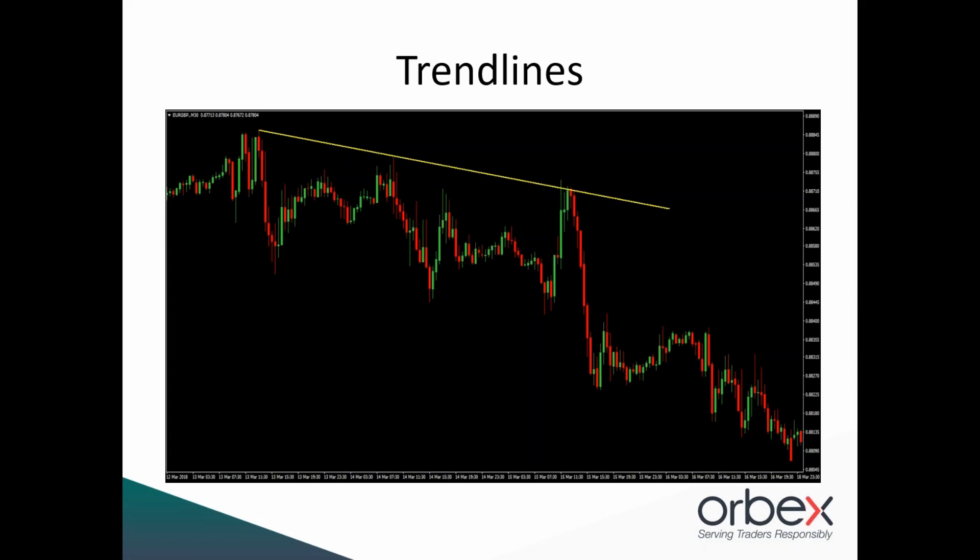When it comes to improving our trend line trading, one of the best ways is using confluence. For those who've been in my other sessions, confluence is something I talk about a lot — it refers to where we identify two or more technical elements occurring in the same place giving us the same reading. We can use confluence between trend lines, support and resistance, Fibonacci levels, or technical indicators.